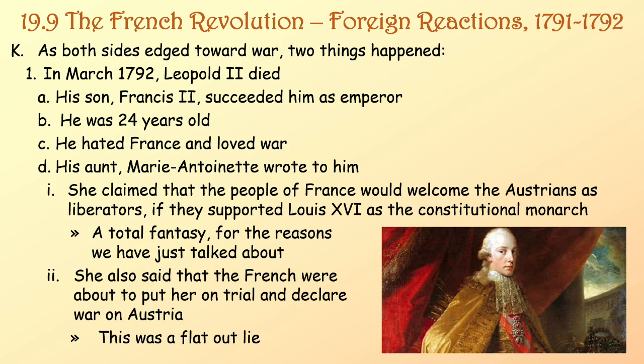As both sides edged toward war, two things happened. Number one, in March 1792, Leopold II died. His son Francis II, 24 years old, succeeded him as emperor — he hated France and loved war. His aunt Marie Antoinette wrote to him claiming the people of France would welcome the Austrians as liberators if they supported Louis XVI as constitutional monarch — a total fantasy. She also said the French were about to put her on trial and declare war on Austria — a flat-out lie.